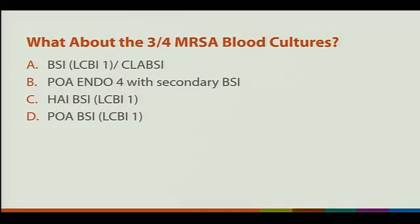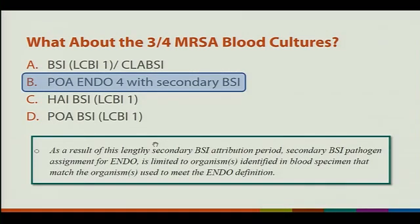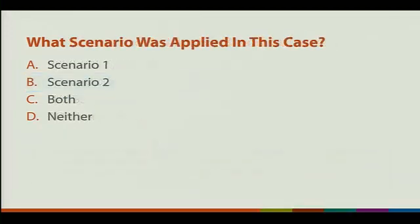What about the 3-4 blood cultures? B — it would be secondary to the POA endo-4. Because the lengthy SBAP associated with endo is only limited to the organisms identified in the blood specimen that match the organisms used to meet endo. That's in Chapter 17, page 17-12.